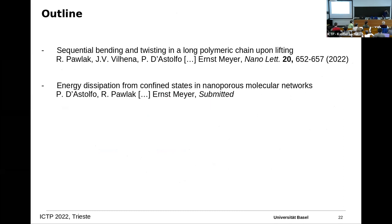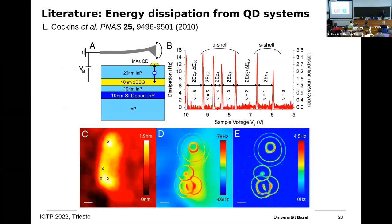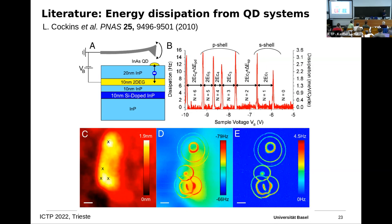Now I'll go to the second part: energy dissipation in quantum dots. This was first shown in 2010 by the group of Peter Grutter, who demonstrated that when you use an AFM as a gate voltage — approaching it on top of a quantum dot — you can tune the electron occupancy on the dot and observe both charging of the dot and associated energy dissipation.